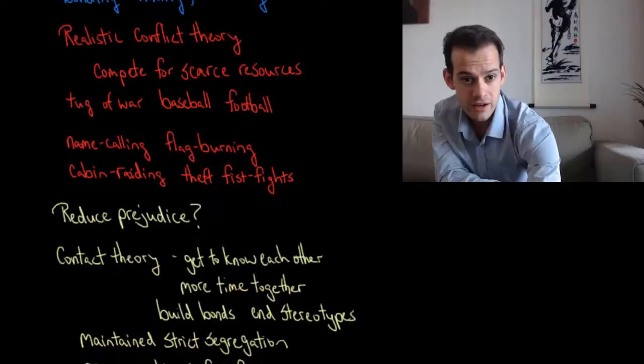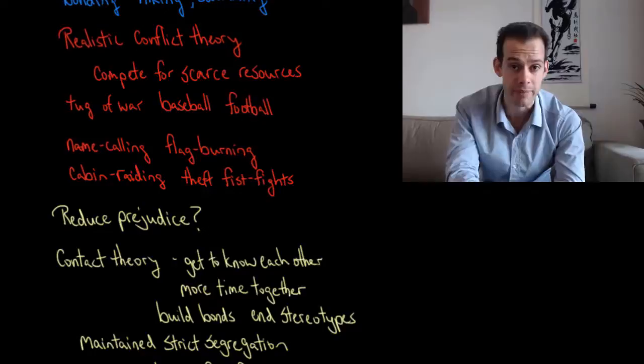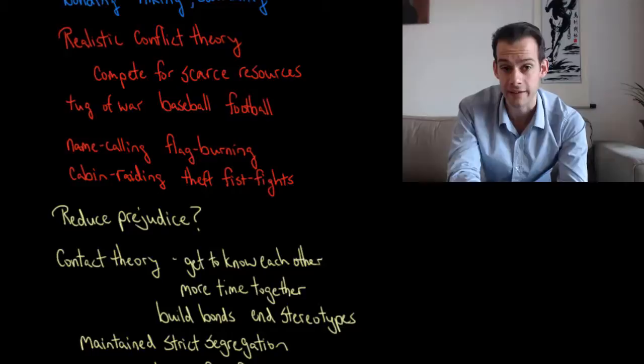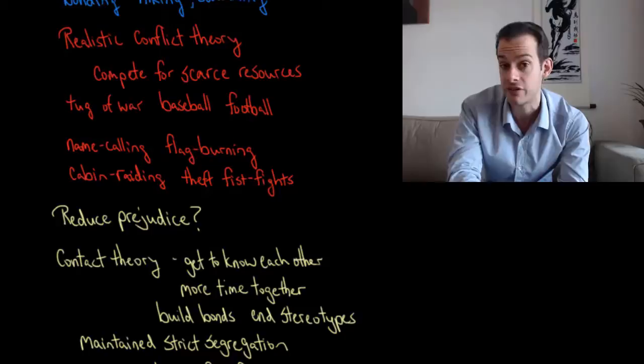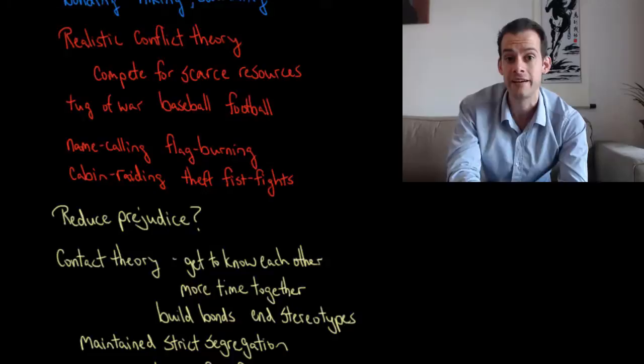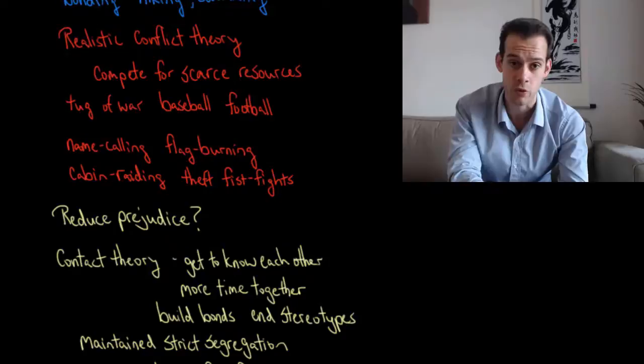The two groups were then put into competition with each other, based on the idea of realistic conflict theory — the idea that prejudice and discrimination result from groups competing for scarce resources. The Eagles and the Rattlers competed in tug of war, baseball, football, and other activities. This was successful in increasing conflict: the groups started calling each other names, attempted to steal and burn each other's flags, raided each other's cabins, tried to steal things, and fist fights broke out. The researchers had successfully created prejudice and discrimination between the two groups.